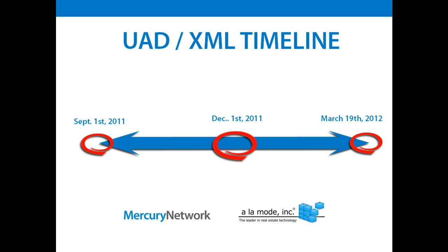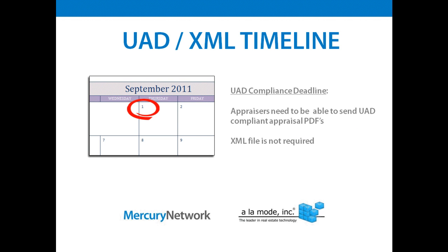As you'll see by the timeline, UAD was the part that had to come first. It was the kickoff of all of the UMDP requirements and deadlines that will follow, but since UAD is one of the main components of the UMDP, it had to be first in the deadline. As of September 1st, all residential and condo home loans to be sold to Fannie Mae and Freddie will require the UAD-compliant format on their appraisals. The XML file is not required to be sent with the PDF.